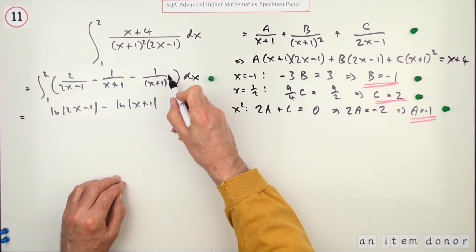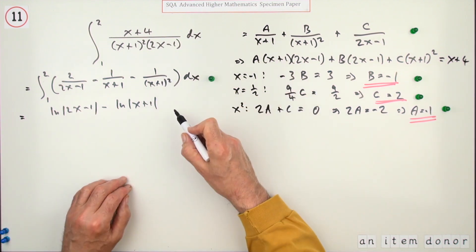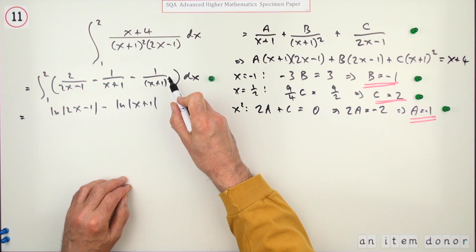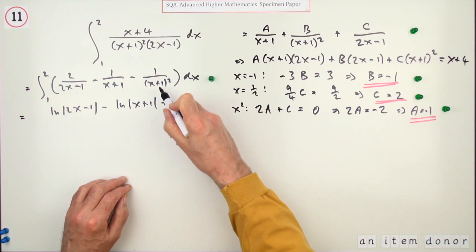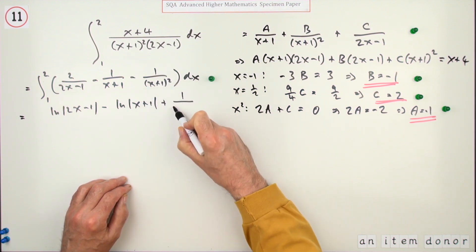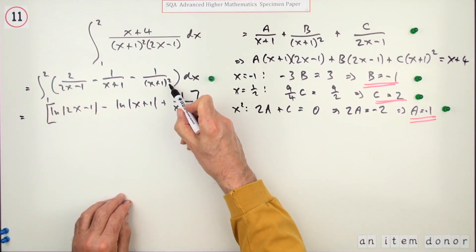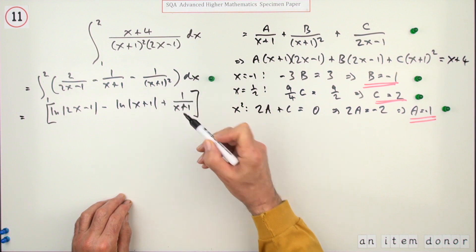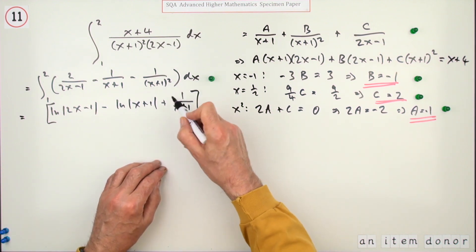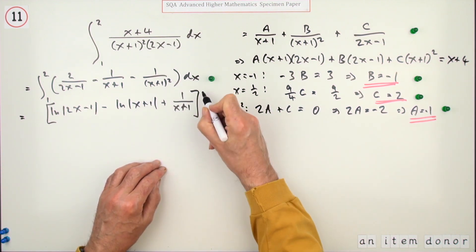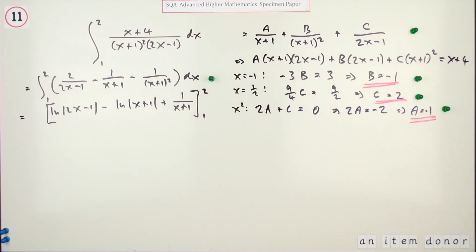That you could rewrite as power -2 if you like, but you can see what's happening. -2 will go back up to -1; you're dividing by that new power, dividing by -1, so it'll turn into a plus. So that's what you're left with: 1/(x+1). The next mark is for integrating all three terms.